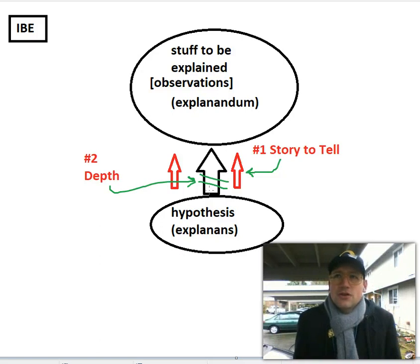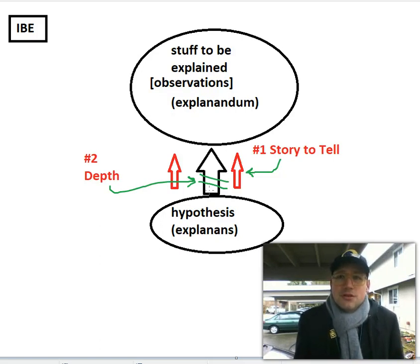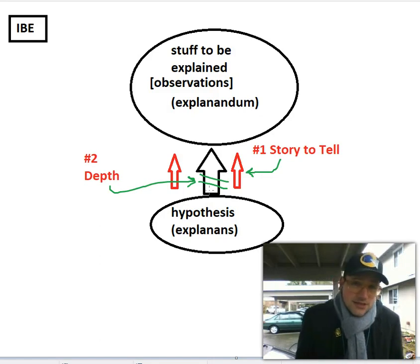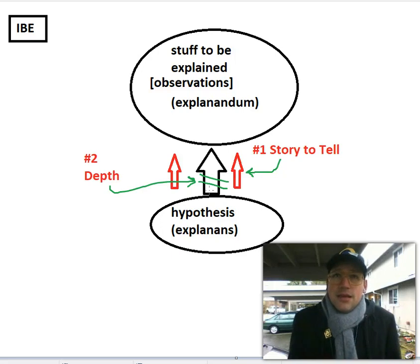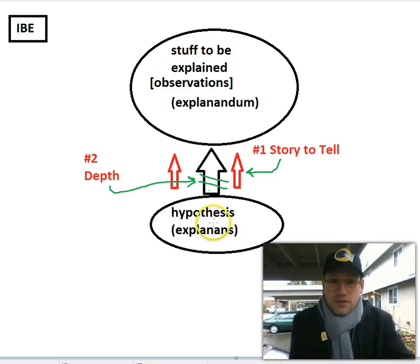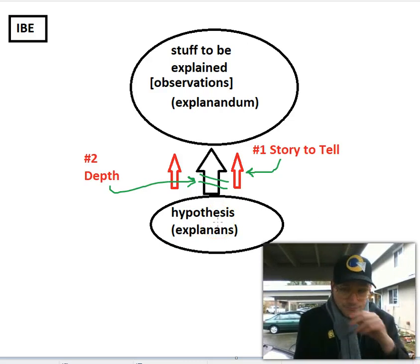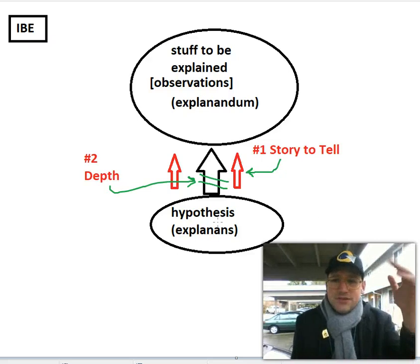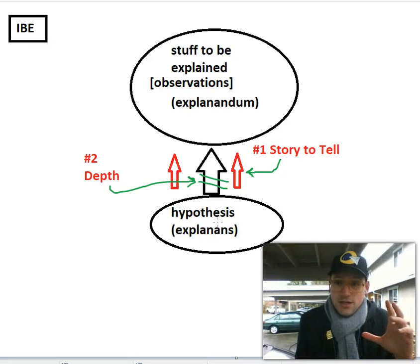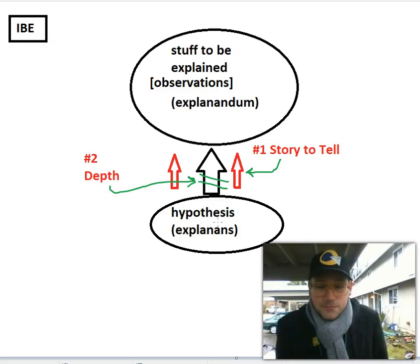Going back to the wicked witch example: questions like 'why did the witch make them invisible?' or 'how could they have that power?' are not relevant for depth. The key tip is that in order for an explanation to be deep, you don't need to explain the explanation itself — that's just a different explanation. Just like a sub-argument to defend a main argument is a different argument from the main argument. So that's depth.